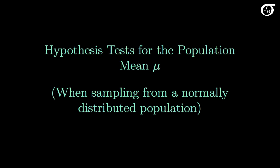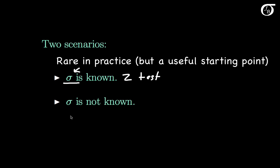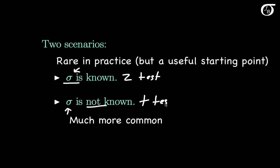Let's look into a hypothesis test for the population mean mu when sampling from a normally distributed population. There are two different scenarios here, and we use two slightly different methods. If sigma, the population standard deviation, is known, we're going to use a z-test. However, this is going to be rare. Usually sigma is not known, and then we're going to use a t-test. This video is about the situation where sigma is known, and so we're using a z-test. I have a separate video for the t-test.